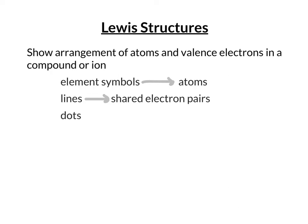You'll also see dots, and those dots represent electrons that are not shared. Most often those will be in pairs, and we call them lone pairs. You'll see individual dots if there's an odd number of electrons in that substance.